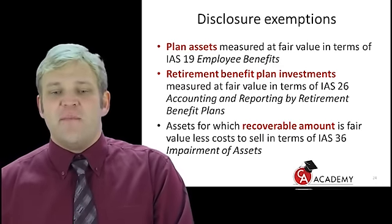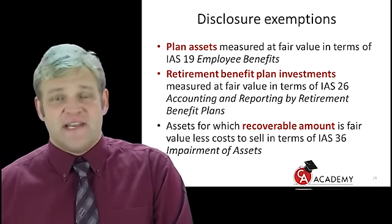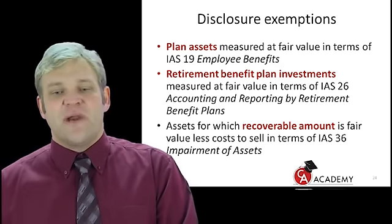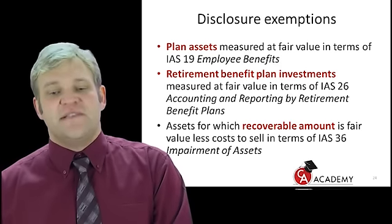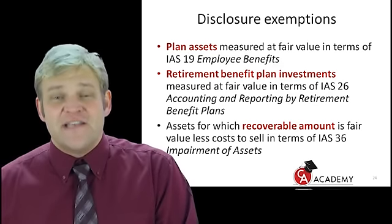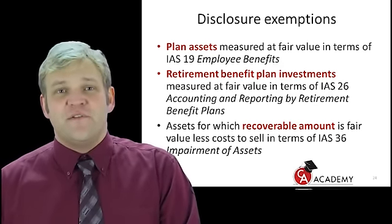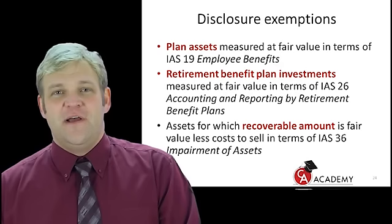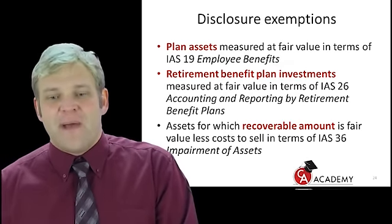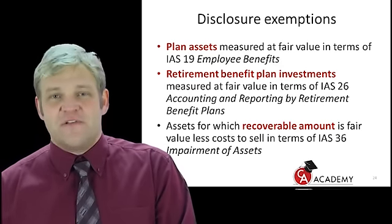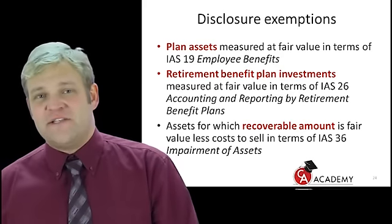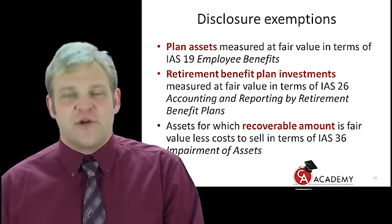Secondly, retirement benefit plan investments in terms of IAS-26 — that's not even within the scope of your studies. Number three, assets for which the recoverable amount is fair value less cost to sell in terms of IAS-36. IFRS 13 applies to fair value less cost to sell, so you have to determine where the inputs come from. But when you are testing for impairment and find that the recoverable amount is fair value less cost to sell and you impair your asset to that recoverable amount, you are exempt from the disclosure requirements.